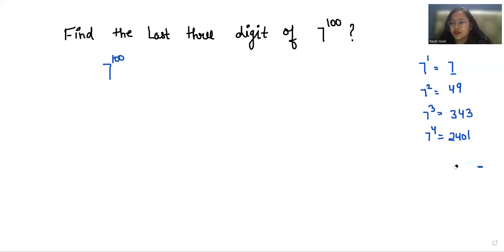And erase this, so we don't need it because it gives a repeat. Now the highest power that does not give any repetition is 7 power 4, so I am going to multiply and divide with 7 power 4 in the power. So 7 power 4, we know that it is 2401, power 100 divided by 4, we can write it as 25.